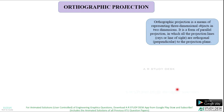Orthographic projection is nothing but the representation of 3D objects in 2D. It is a form of parallel projection in which the line of sight will be perpendicular to the plane of projection. Since it is perpendicular to the plane of projection, it is called orthographic projection.